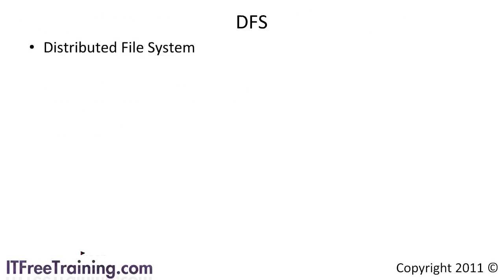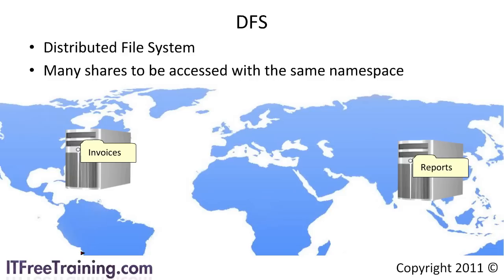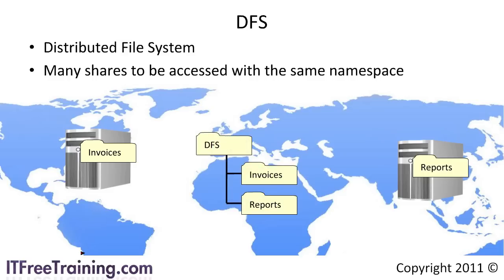Distributed file system or DFS allows a user to access many different file shares using the same namespace. Consider this: you have two servers located on different sides of the world that a user needs to access. Normally the user would need to map two different network drives to these servers. With DFS you can create one DFS root which can access both shares. When a user accesses the DFS root and attempts to access one of the folders, the user is redirected to the server that contains the file share. The end user does not need to know the name of the file share or the server on which it is located.